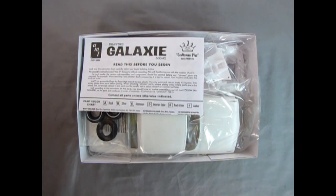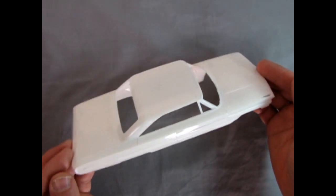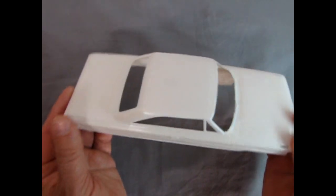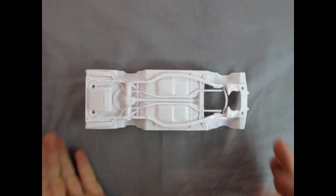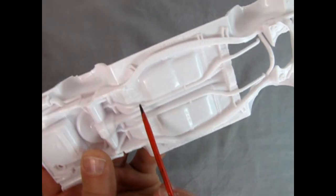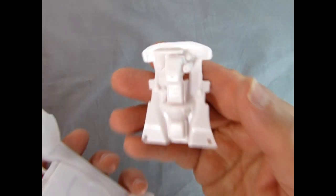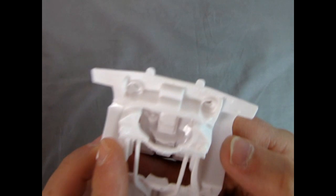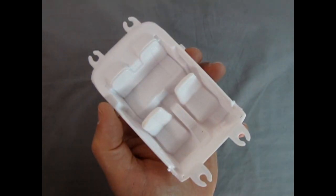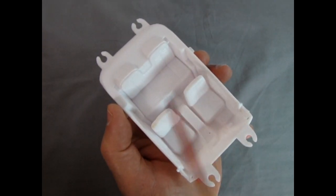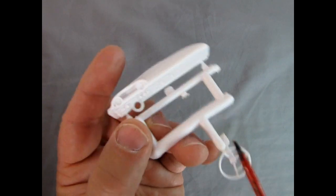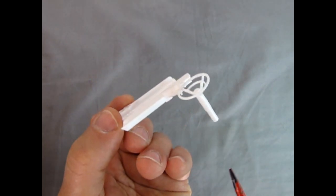Inside the box you get an authentic 1/25th scale 1964 Ford Galaxy body, detailed chassis with specs on the real car, an easy to install engine plug for the chassis, interior tub with bucket seats molded in place, elaborate dashboard and a steering wheel with a molded on steering column.